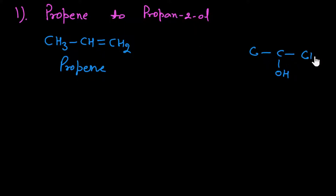This is the structure of propane-2-ol (single bond, OH at second carbon). The most important thing about conversions is that we first draw the structures of what is given and what is required, then we look at the requirements and see which reactions are needed to complete the conversion step by step.